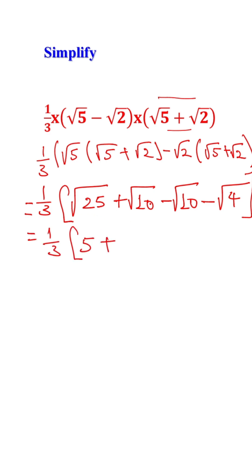Plus square root of 10 minus square root of 10 — these become zero, since they are equal and opposite. Minus the square root of 4, which is 2, since 25 and 4 are perfect squares. So we can simplify square root of 25 to 5 and square root of 4 to 2, while the square root of 10 terms cancel out.